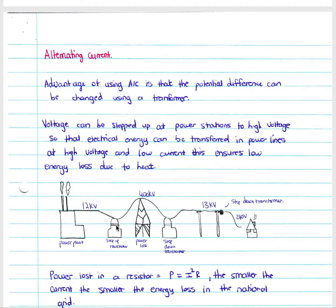Looking at this example: we have our power plant, and a step up transformer before we feed it into the power lines — going from 12 kilovolts to 400 kilovolts. So we've increased our voltage, and then we have a step down when we get to our cities or the place where we want to use our current.